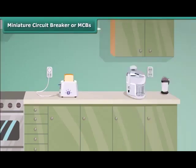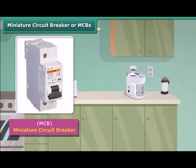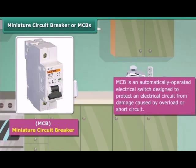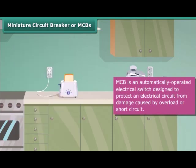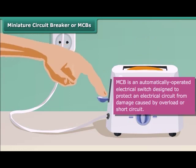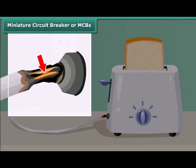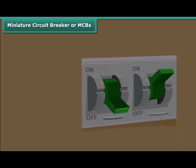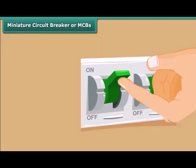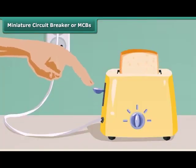A Miniature Circuit Breaker, or MCB, is an automatically operated electrical switch designed to protect an electrical circuit from damage caused by overload or short circuit. Whenever there is a fault in a circuit, the MCB interrupts continuity to discontinue electrical flow immediately. It can be reset to resume normal operation.